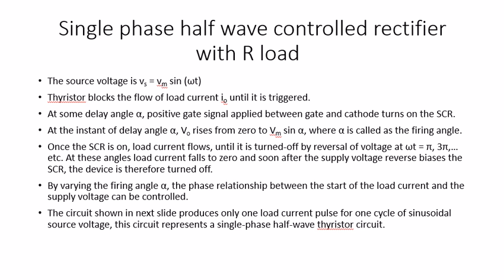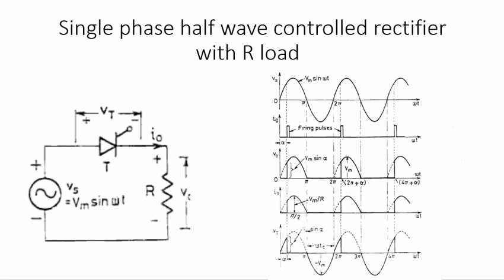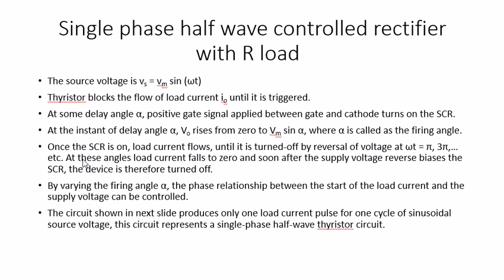The firing angle is the angle from which the thyristor begins conduction. The load current flows until it is turned off by the reversing voltage at ωt = π. At π, 2π, and so on, the angle of the load current goes to zero as the supply reverse biases the SCR and the device is therefore turned off. By varying the firing angle, the phase relationship between the start of load current and the supply voltage can be controlled. This is shown in the circuit diagram of the single phase half wave rectifier with R-load.